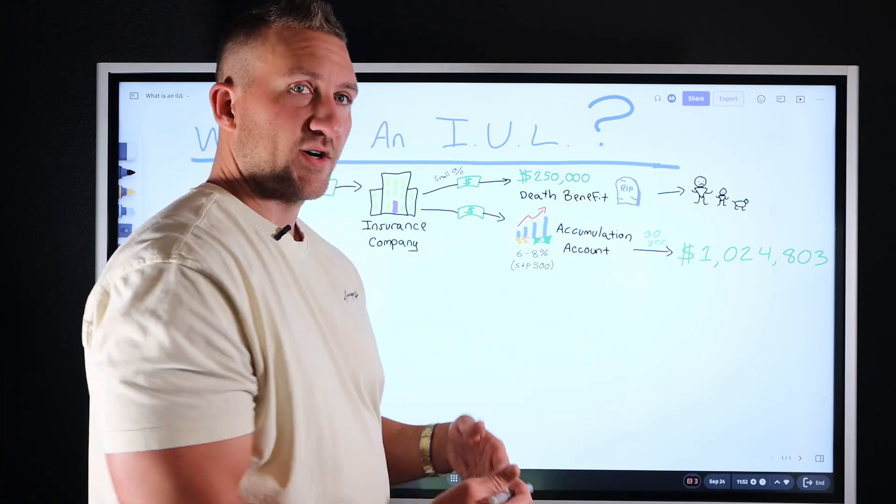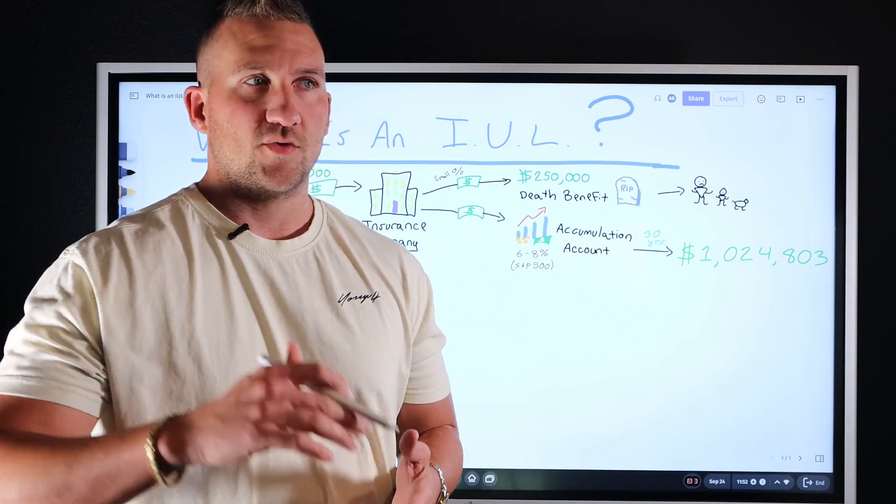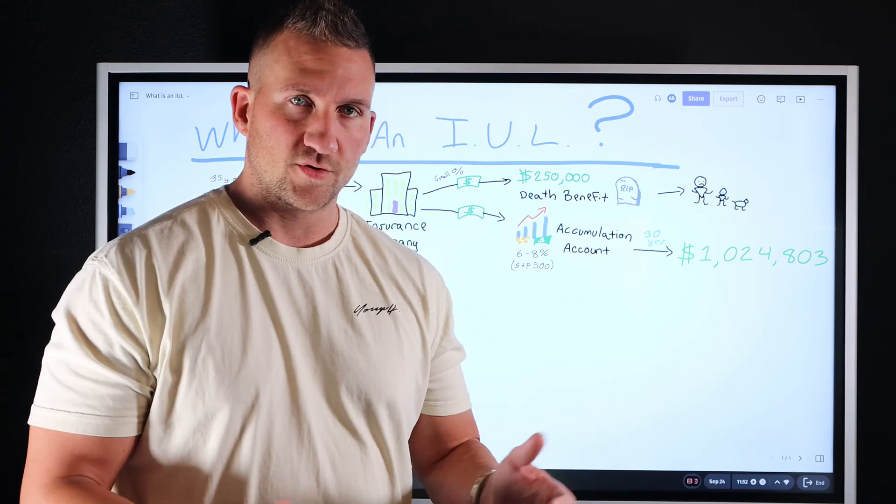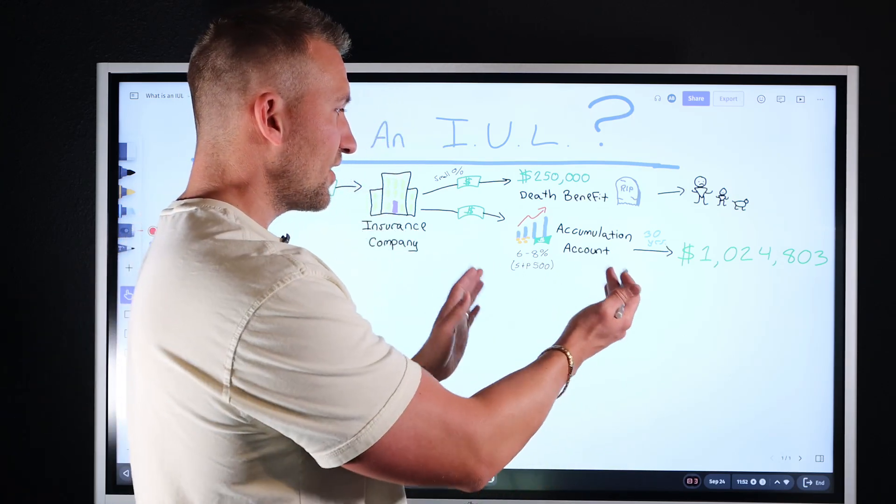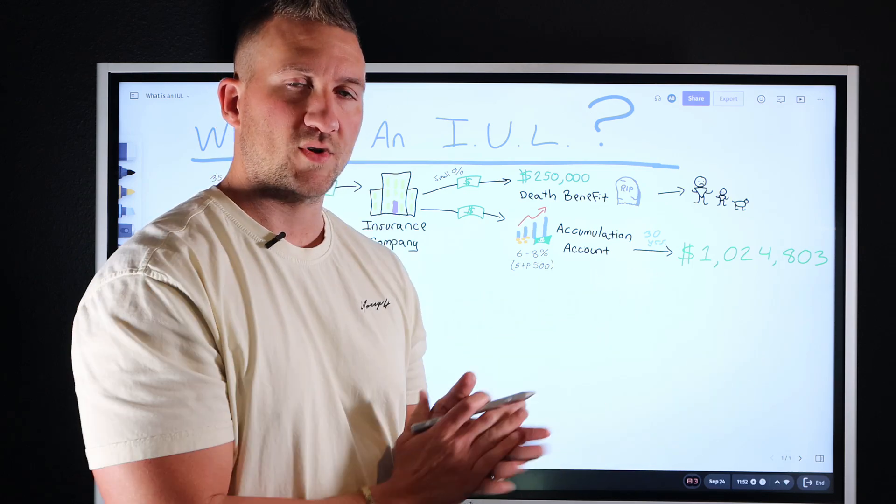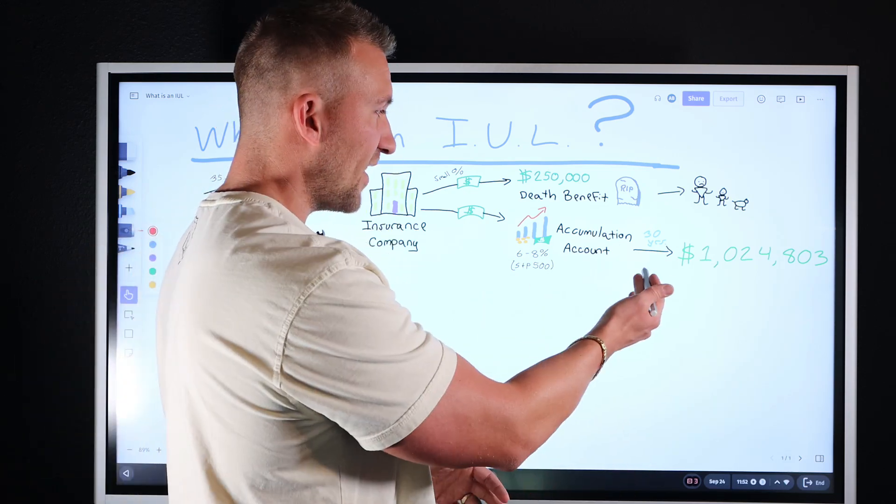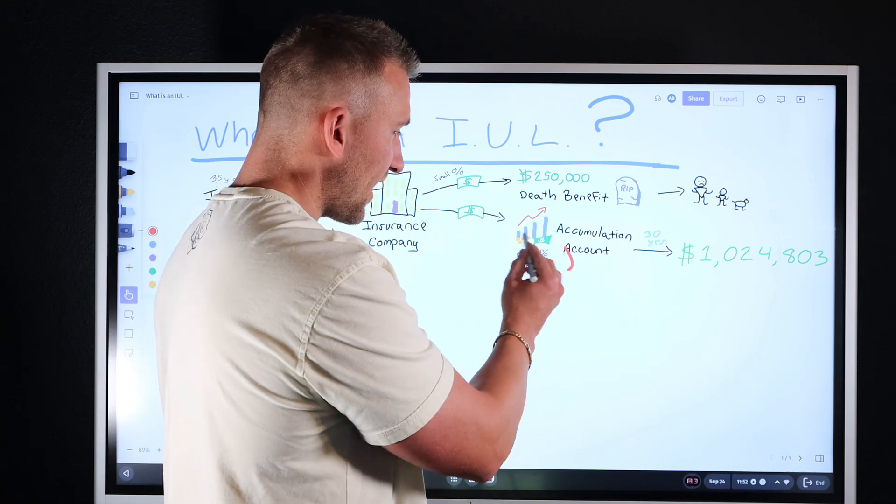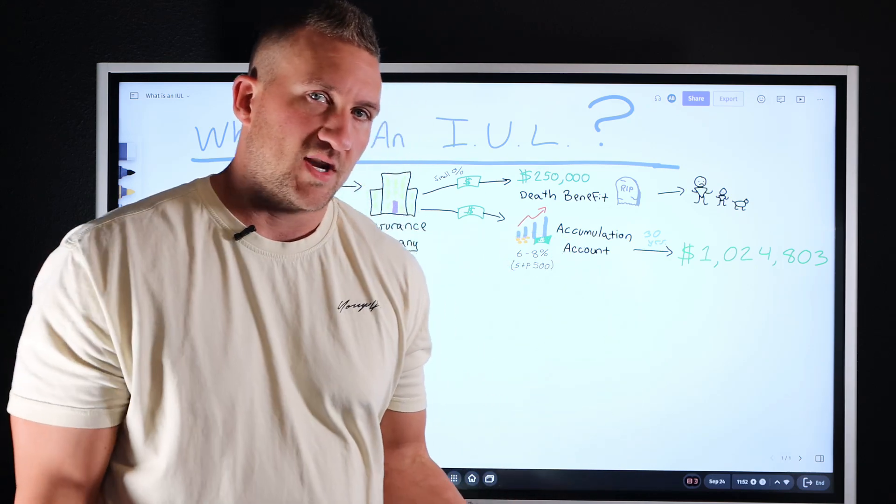He's going to be credited on an annual basis, assuming that you have annual index allocations. You could have monthly, you could have annual, you could have two-year. But let's just say on average, it's going to be a one-year point-to-point call option. So he's going to get credited on the interest accrued in his account once per year. On average, somewhere between six to eight percent realistically.